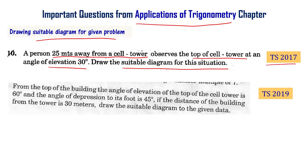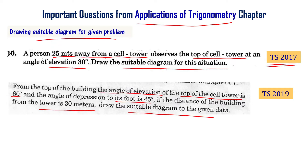This is Telangana Public Exam 2017. From the top of the building, the angle of elevation of the top of the cell tower is 60 degrees and the angle of depression to its foot is 45 degrees. If the distance of the building from the tower is 30 meters, draw the suitable diagram to the given data. This is Telangana Public Exam 2019.